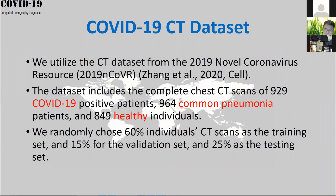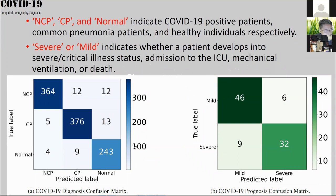The dataset used is published in Cell, containing over 900 COVID-19 positive patients, over 900 common pneumonia patients, and over 800 healthy individuals. We split the data into 60% training, 15% validation, and 25% testing. The classification task is trinary: COVID-19 positive (NCP), common pneumonia (CP), and normal.